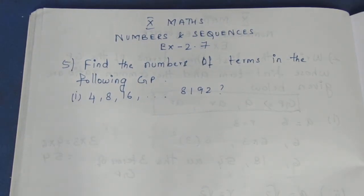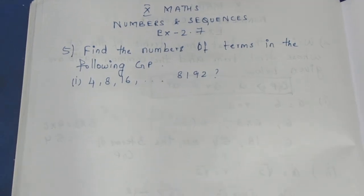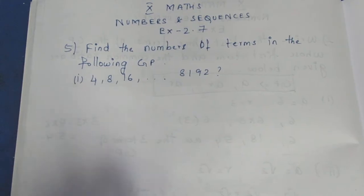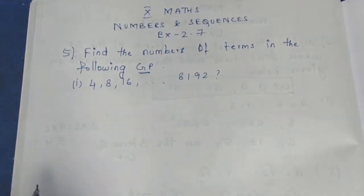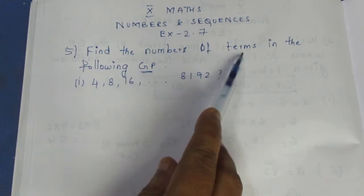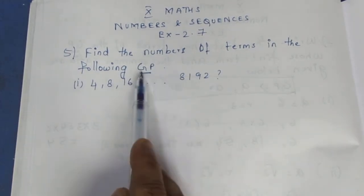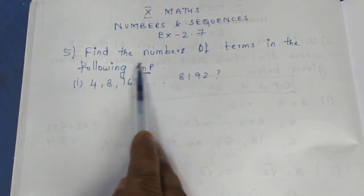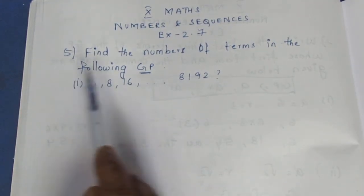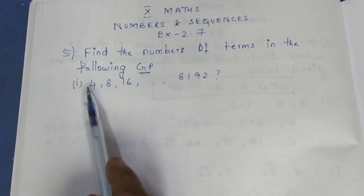Find the number of terms in the following GP. If you look at the number of terms, there is no direct formula for the number of terms in a GP like there is for an AP. Let's look at the first question.